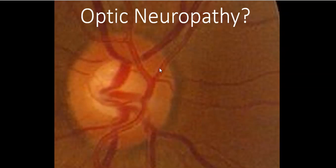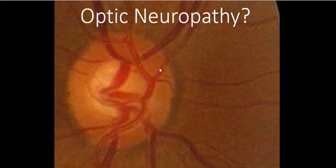Coming back to the picture we initially started with, I'll ask the question: does this patient have an optic neuropathy? We'll forgive that the cup-disc ratio is a little large at 0.5, which can still be normal. The mistake would be to say they don't have an optic neuropathy. The truth is we don't know — there's no evidence here that suggests that's the case, but they certainly can have an optic neuropathy.